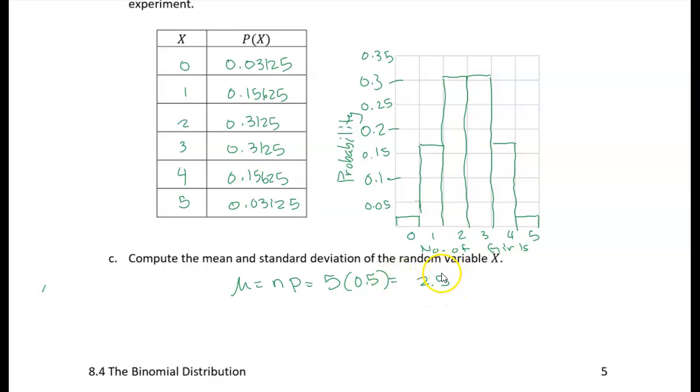So that kind of makes sense. The average is, on average, 2.5 girls. Half of them are going to be girls, and half are going to be boys. Of course, with five trials, you're never going to get 2.5 girls. You're going to get two girls or three boys or three boys and two girls. But that's our mean, is 2.5.